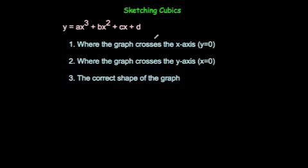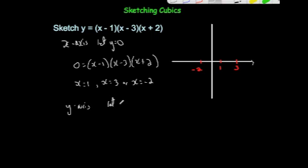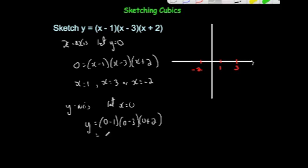Next, you want to find where it crosses the y-axis, so you let x equal 0. Putting x equals 0 gives y equals (0 minus 1)(0 minus 3)(0 plus 2), which is minus 1 times minus 3 times 2. Minus 1 times minus 3 is 3, times 2 is equal to 6. So it's going to cross the y-axis at 6.